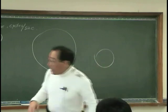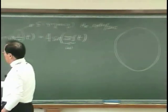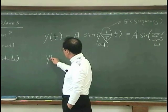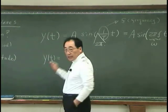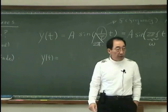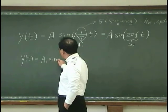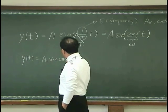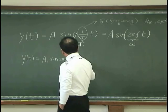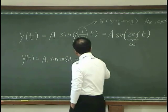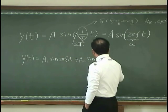So, mathematically, this means that y of t can be written as plus a1 sine 2 pi f1 t plus a2 sine 2 pi f2 t.